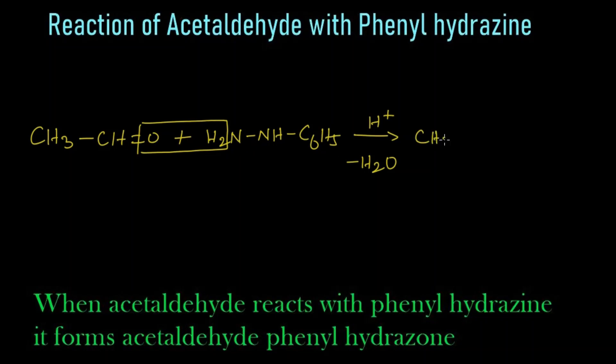So we get CH3-CH double bond N single bond NH-C6H5. The name of this compound is acetaldehyde phenylhydrazone.